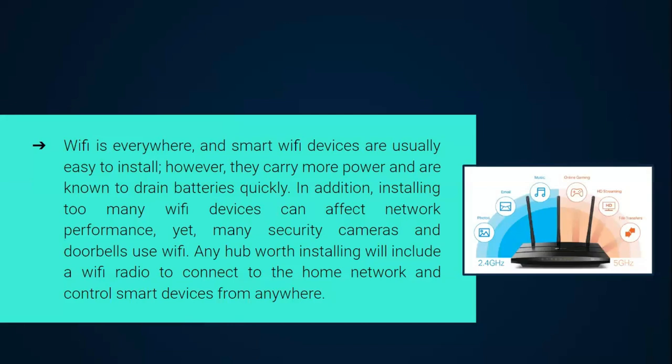Wi-Fi is everywhere and smart Wi-Fi devices are usually easy to install. However, they carry more power and are known to drain batteries quickly. In addition, installing too many Wi-Fi devices can affect network performance, yet many security cameras and doorbells use Wi-Fi to operate. Any hub worth installing will include a Wi-Fi radio to connect to the home network and control smart devices from basically anywhere.